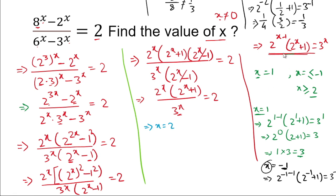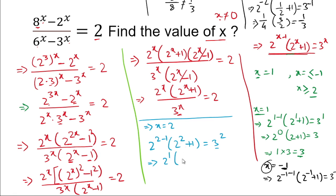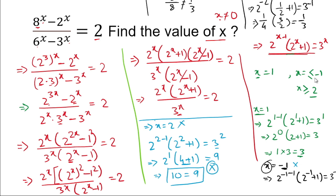We test x=2: substituting gives 2 to the power (2-1) times (2 to the power 2 plus 1) equals 3 to the power 2. This simplifies to 2 times 5 equals 9, giving 10 equals 9. This does not hold, so x=2 does not satisfy the equation. Therefore, x=-1 and x=2 are rejected, and the only valid solution is x=1.